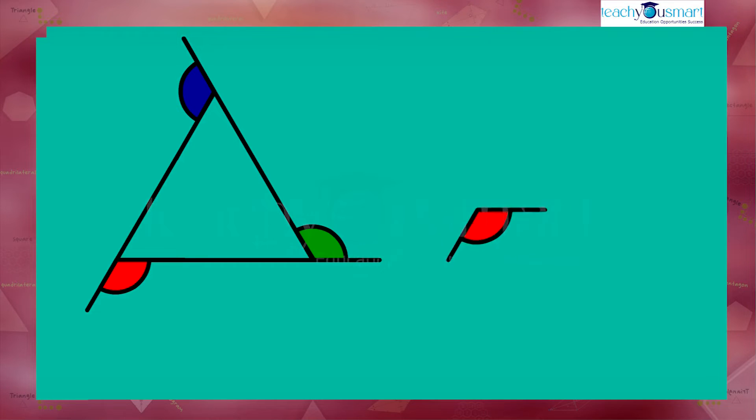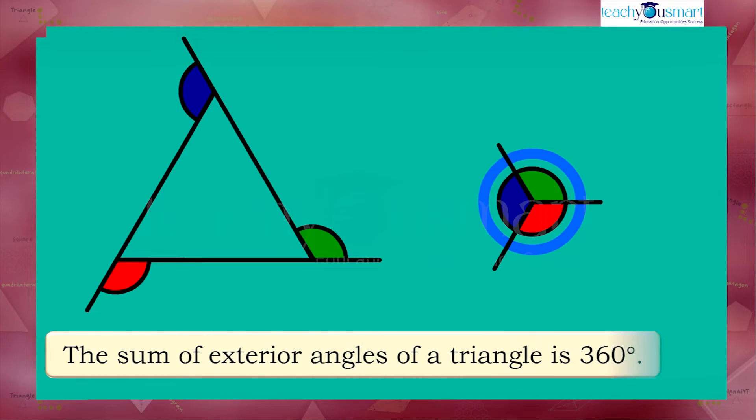Let's see what happens when we arrange the exterior angles around a point. They form a circle. That is, the sum of exterior angles of a triangle is 360 degrees.